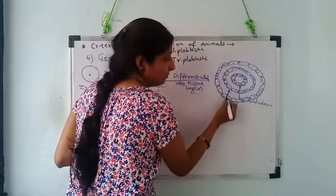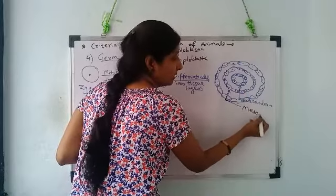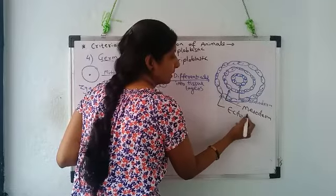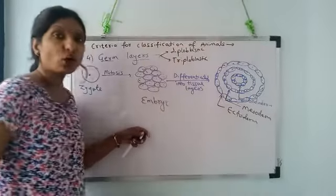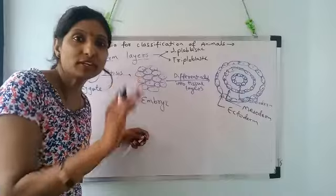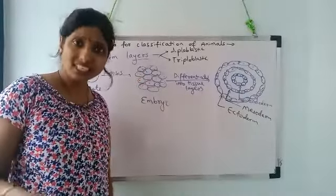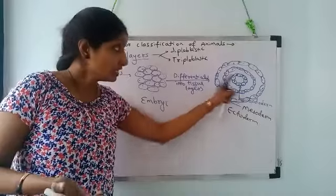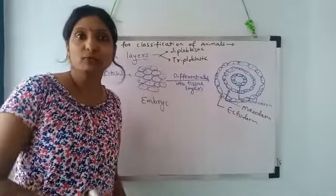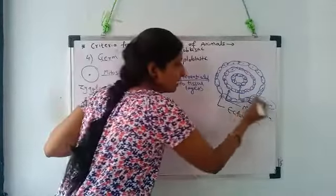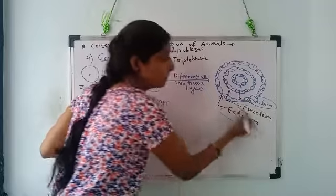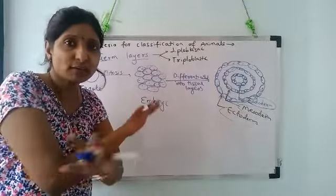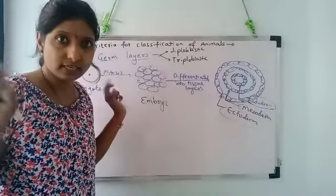Now innermost is endoderm, middle is mesoderm, and outermost is ectoderm. So how many germ layers? How many tissue layers? Three. This is a very important stage of our life when these three germ layers form. Each germ layer is differentiated. Differentiated means its own function is fixed. It will not interfere in any other's function.